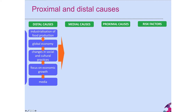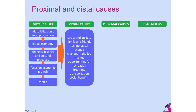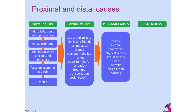These interactions lead to medial causes such as stress and anxiety, relationships between family and friends, technological changes in our communities, changes in the job market, opportunities for recreation, free time, transportation networks, and the social welfare system that supports us when things go wrong — such as when we lose our job. These in turn lead to proximal causes such as smoking more, drinking more alcohol, having or not having a healthy diet, lack of physical activity, unsafe sex, not getting enough sleep, becoming overweight and obese, and increasing air pollution.